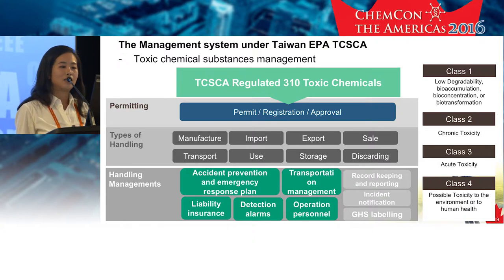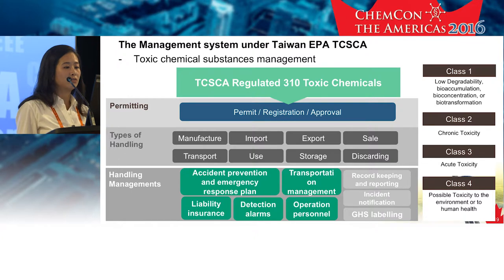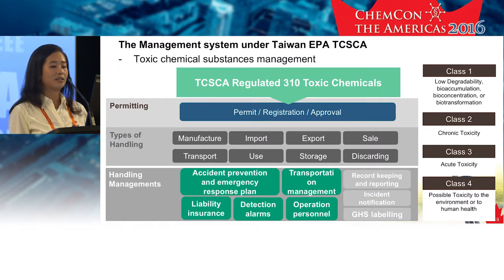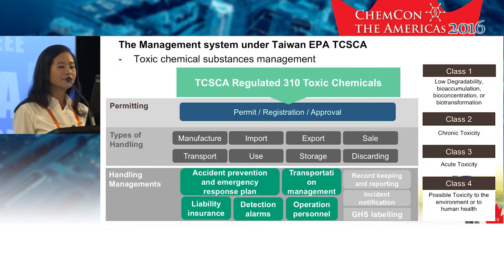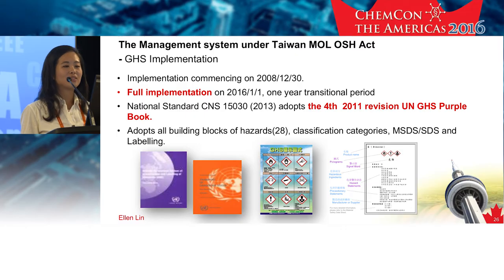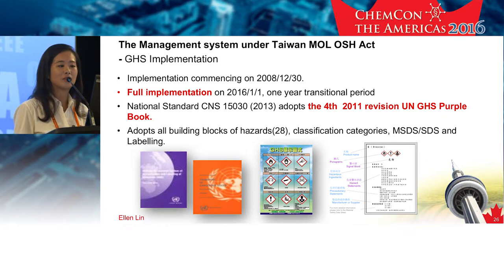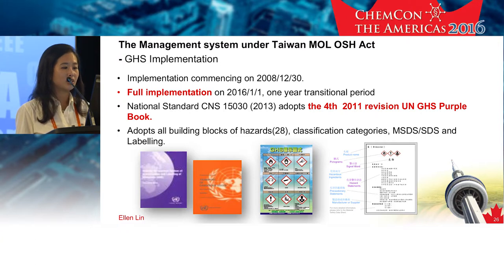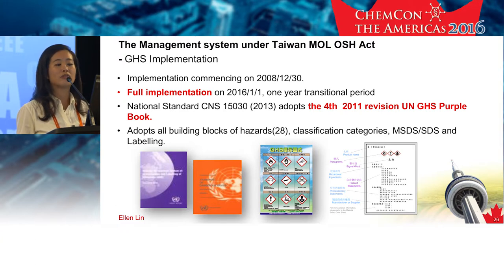Once a chemical has been announced as class 1 to 4, companies who handle it will need to apply for permits, registration, and approvals — and the registration tier is not the same as the one just discussed. You also have to comply with relevant management measures under different handling conditions. CNS 15030, the classification and labeling of chemicals, is the main national standard for chemical classification and labeling in Taiwan, and it adopted the fourth version of the GHS purple book. Several GHS-related regulations among different agencies in Taiwan all refer to this standard.